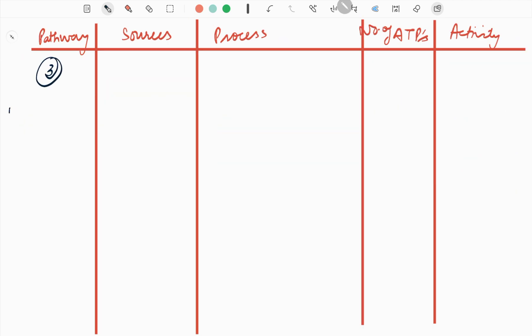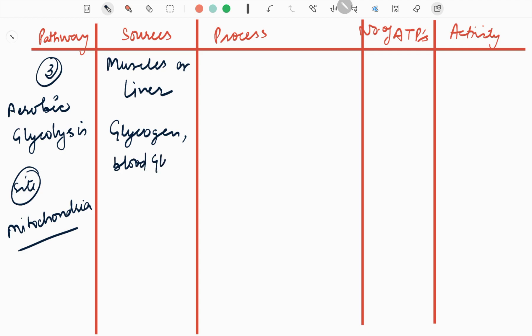Now the third is aerobic glycolysis. Their site is mitochondria. So the sources are muscle or liver glycogen, blood glucose, adipose tissues, and intramolecular fat.